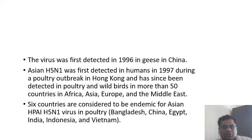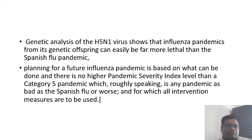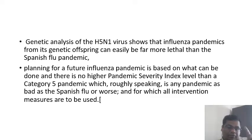Six countries are endemic for highly pathogenic H5N1 in poultry — including India, along with Bangladesh, China, Egypt, Indonesia, and Vietnam. This is problematic as it prevents the growth of the poultry industry and bans poultry exports to European markets, leading to significant loss of foreign revenue. Genetic analysis of H5N1 shows that an influenza pandemic arising from it could be far more lethal than the Spanish flu.